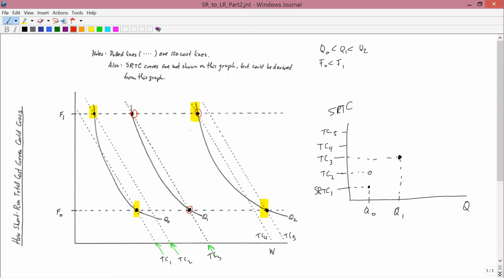The one that's cheaper is this point up here because it's on TC4, which is less than TC5. So the cheapest way of producing Q2 is to buy F1 pounds of fertilizer and you experience a cost of TC4 instead of TC5.